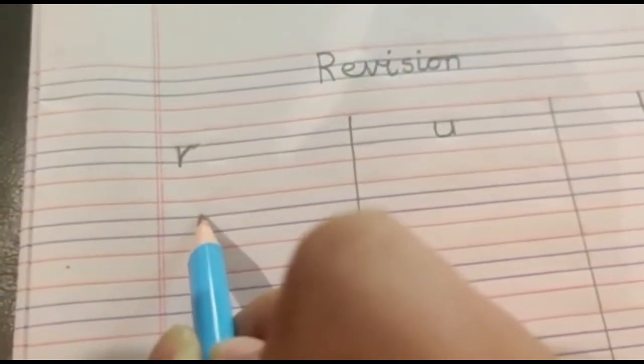So to write R, we start on the first blue line, standing line, up, bumpity, R. From the blue line to the blue line, standing line, then go up and make a bumpity, R. Children, what sound does R make? R says R. R says R.